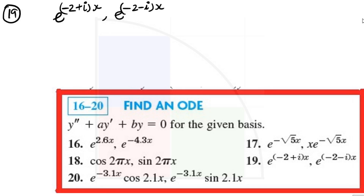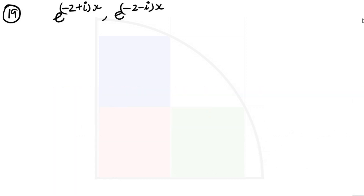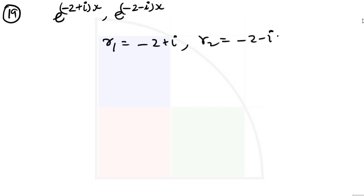This could be a little tricky for many students because it has both a real and imaginary part, giving a complex root. The roots are: r1 equals minus 2 plus i, and r2 equals minus 2 minus i. As you know, whenever there is a complex root it will always appear as a conjugate pair.